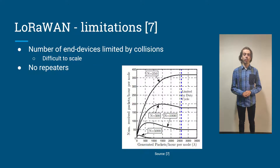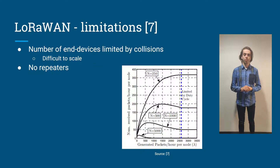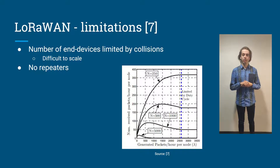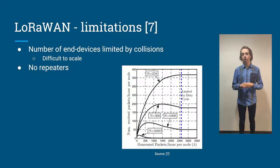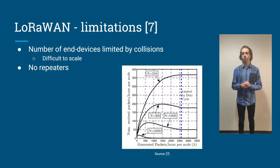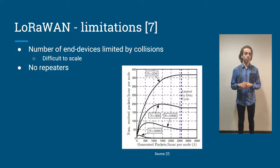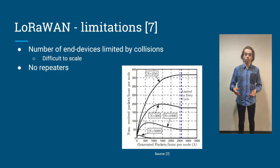We will now evaluate the LoRaWAN system. It has several limitations. For example, the number of end devices is limited by the collisions on the channels it uses. This means it is difficult to scale beyond several thousand devices.